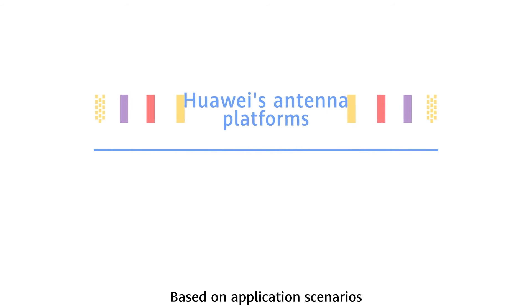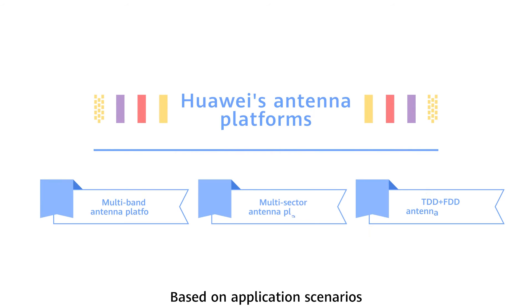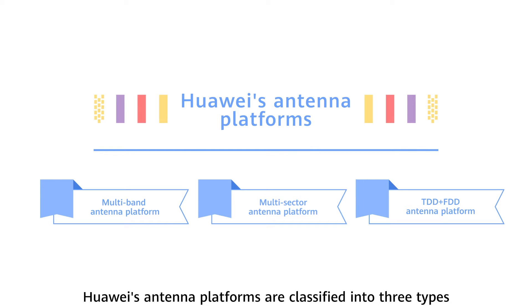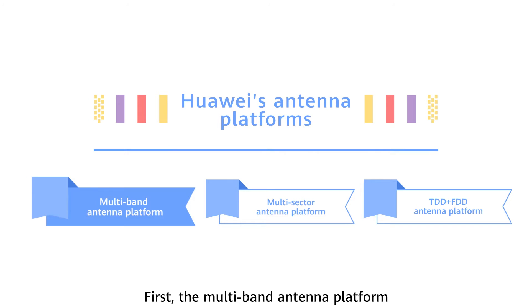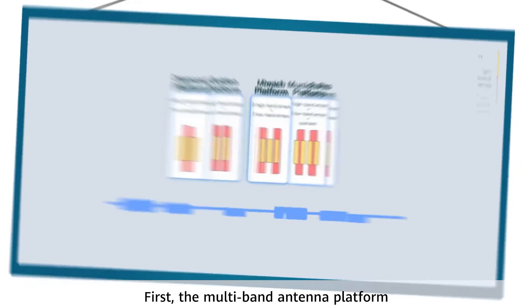Based on application scenarios, Huawei's antenna platforms are classified into three types. First, the multi-band antenna platform.